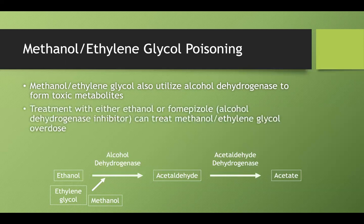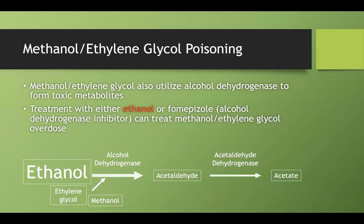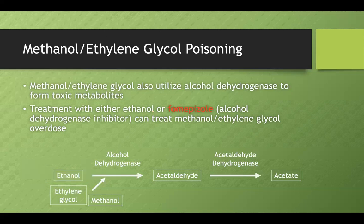You treat this in one of two ways. You can give ethanol, which forces alcohol dehydrogenase to use its resources converting ethanol to acetaldehyde, preventing methanol and ethylene glycol from forming their toxic metabolite. More commonly, you'll give fomepizole, an alcohol dehydrogenase inhibitor, to keep the compounds in their non-toxic form.